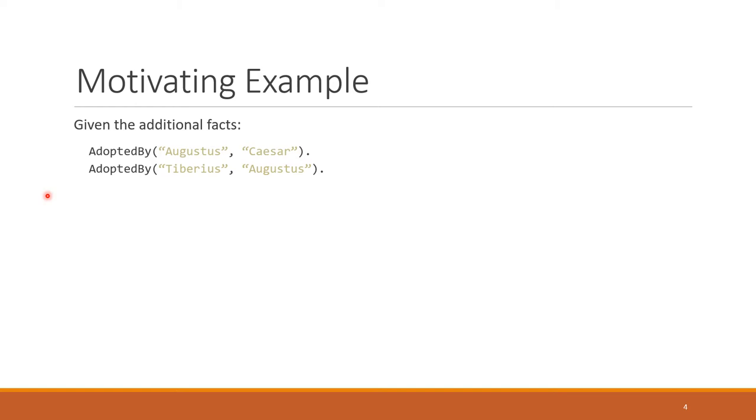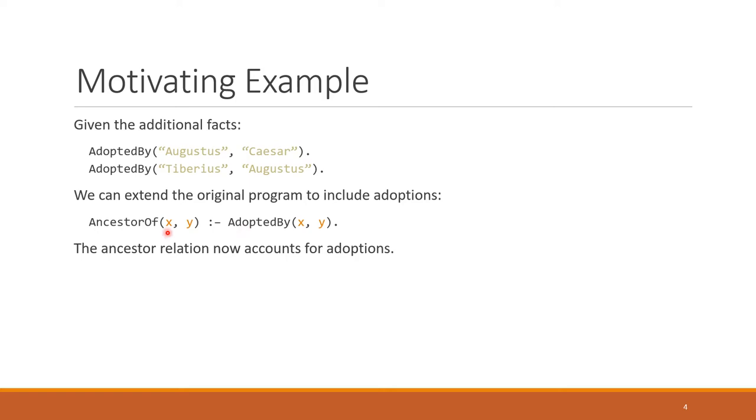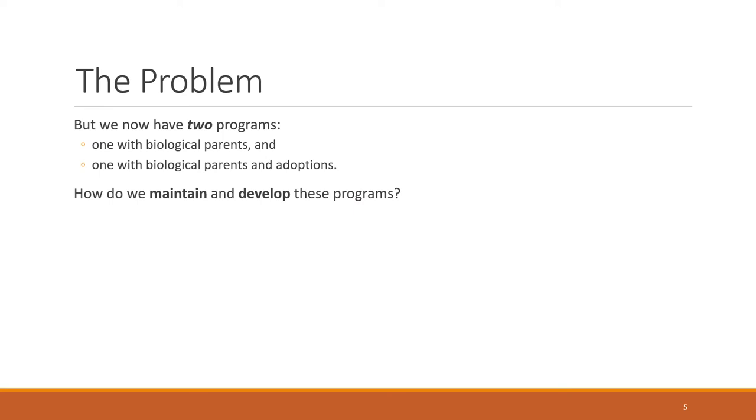Fortunately, we can do this easily by just adding a rule to the Datalog program. Just add a rule that includes adoptions in the ancestor of relation, and everything works as expected. We're now computing ancestry both based on blood and based on adoptions. However, we now have two programs. We have one with biological parents and one with biological parents and adoptions. So what if we wanted to maintain and develop both of these programs?